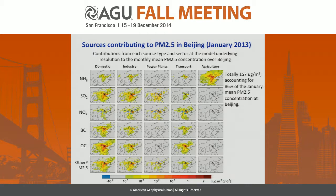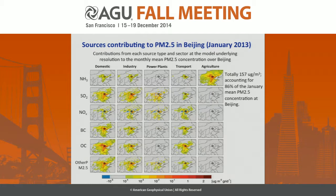By adding all sources together, it equals about 157 micrograms per cubic meter, which is about 86% of the total January mean at Beijing. The rest is attributed to natural background or non-linearity in aerosol chemistry. We can clearly see detailed source contributions for Beijing PM2.5 pollution. In addition to local contributions, we see transport from the south and west. The main contributor is domestic and industry sources, and agricultural ammonia emission is also a big contributor.